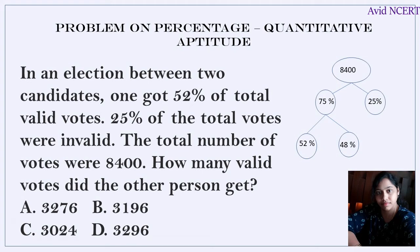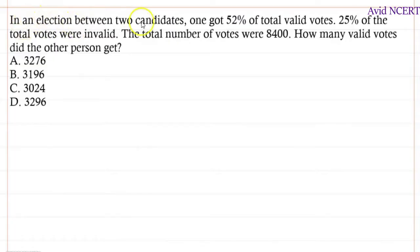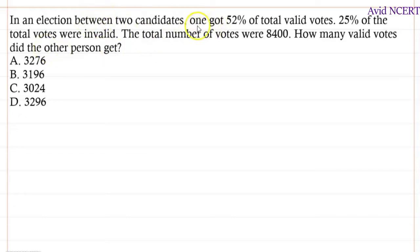Hello viewers, welcome to my channel, this is Geeta. In an election between two candidates, one got 52 percent of the total valid votes. 25 percent of the total votes are invalid. The total number of votes were 8400. Let the two candidates be A and B. So A got 52 percent of the total valid votes.